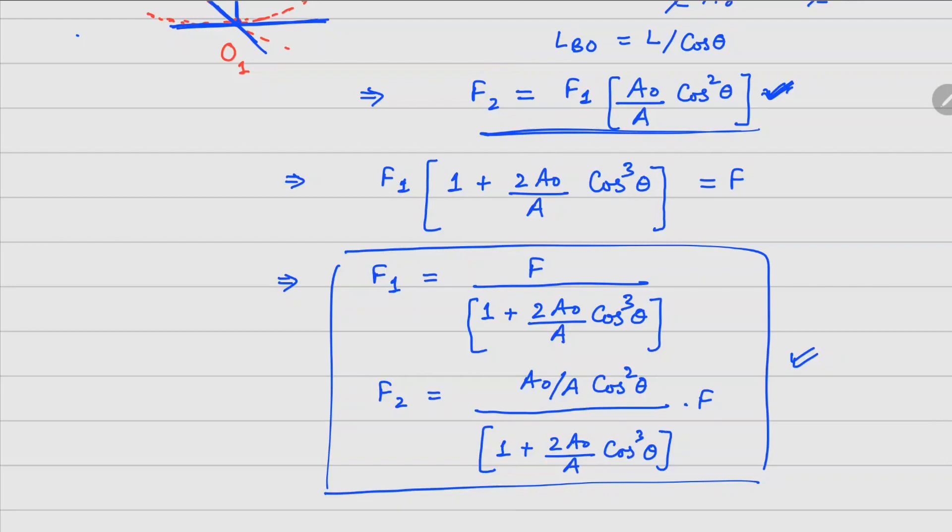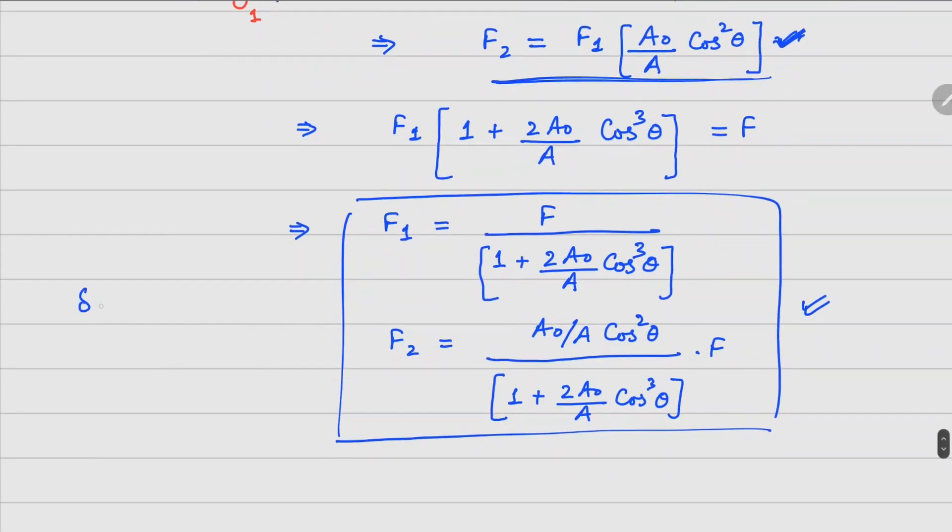Now once we have forces, if you are interested in finding out delta, we can do delta - for example, the vertical force we are interested in is F1 times L divided by E times A. So the F1 value is right here; we can substitute and get the value of delta there.